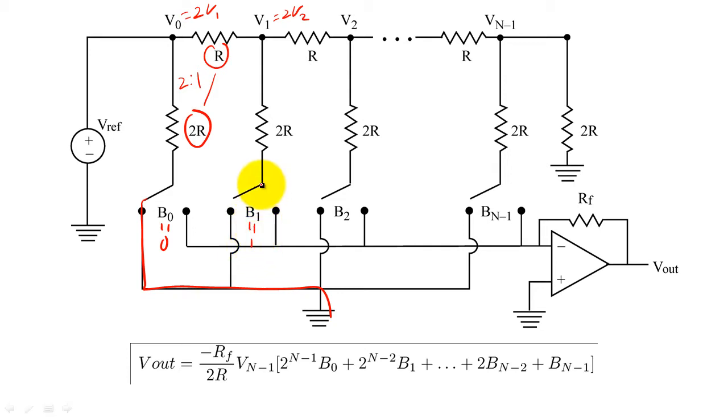If a bit is one, then that rung of the ladder will connect to the op-amp and increase the voltage of the output of the signal.